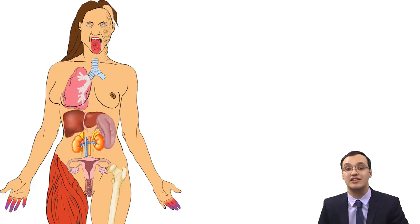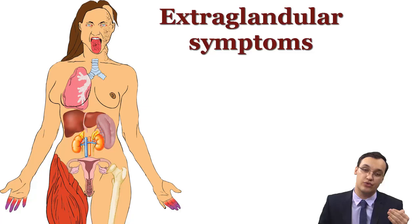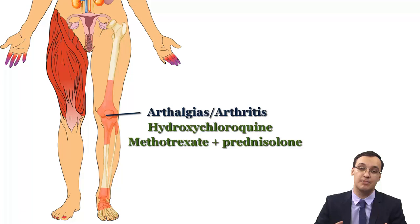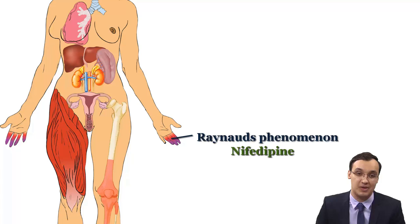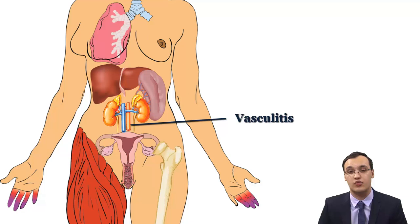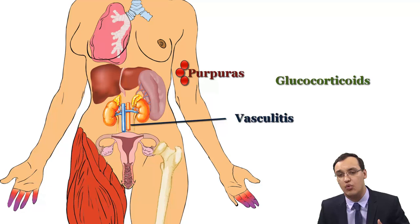Until now we have only looked at exocrine glandular symptoms, but there are also extra-glandular symptoms, listed in decreasing order of frequency. The most common is arthralgias and arthritis, treated with hydroxychloroquine or methotrexate and prednisolone. Raynaud's phenomenon can be seen and is treated with nifedipine and gloves to protect from cold. Lymphadenopathy in the cervical or axillary region can be seen. Vasculitis can present as purpuric skin rashes, treated with glucocorticoids or immunosuppressive agents like cyclophosphamide.